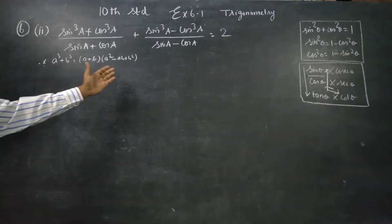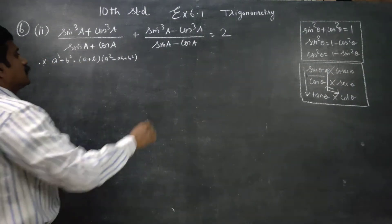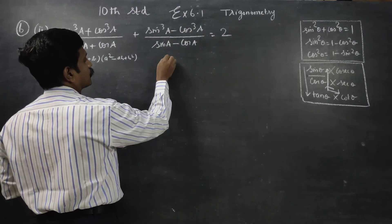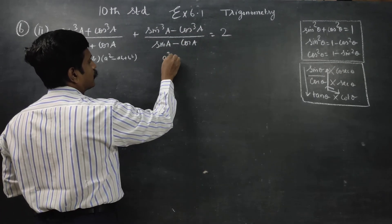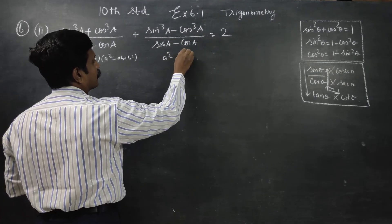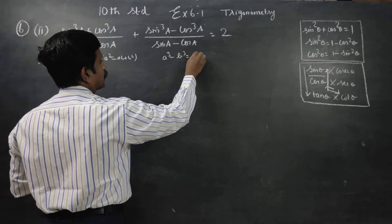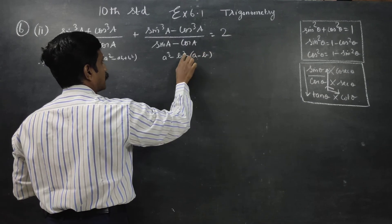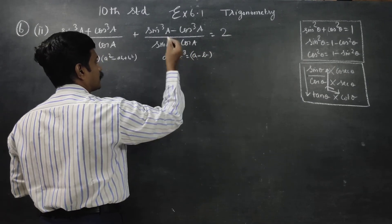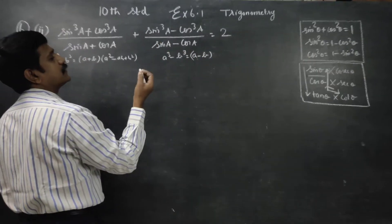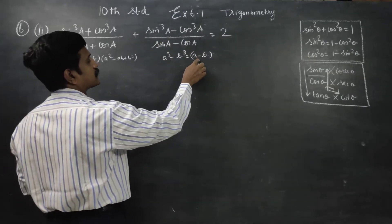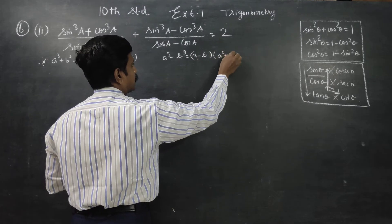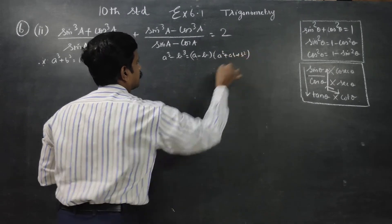This is a cube minus b cube. What is a cube minus b cube formula? a cube minus b cube would be a minus b, into a square plus ab plus b square.